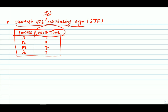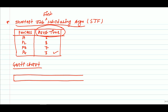Looking at the burst time of each process, P4 has the least burst time. So in the Gantt chart, starting from zero, we execute P4 first, which has a burst time of 3 milliseconds.